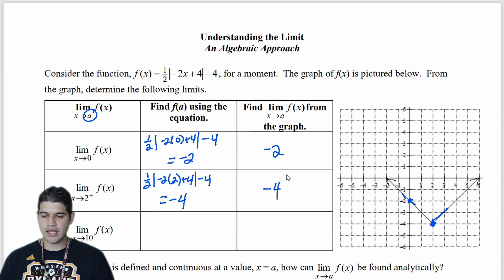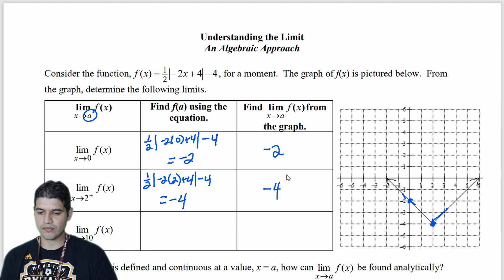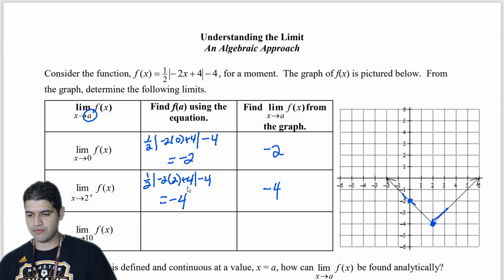And then next, we have the limit of f of x as x approaches 10. Okay, so let's think about this. Let's substitute in our value. So I have 1 half, absolute value, negative 2 times 10, plus 4. Close that, minus 4. All right, so negative 20 plus 4, that gets me negative 16.